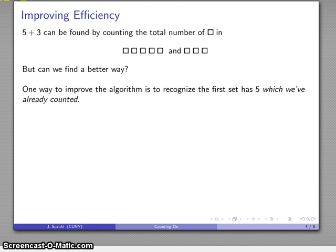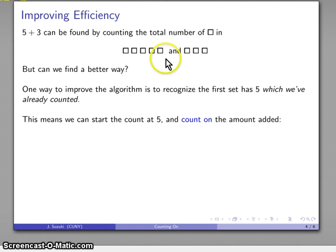One important way to improve the algorithm is to recognize that I don't actually have to count this set 1, 2, 3, 4, 5, because when I put it down, I put down a set of 5. In some sense, I already know how many things are in this set. I don't have to count them. What I can do is start at 5 and go from there. This is known as count on. The idea is I can start my count at 5, here I am, and then count on from that point.